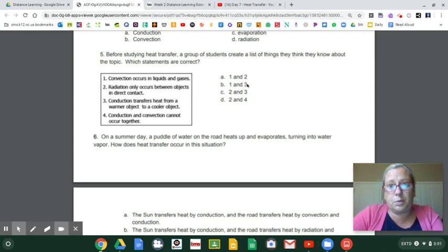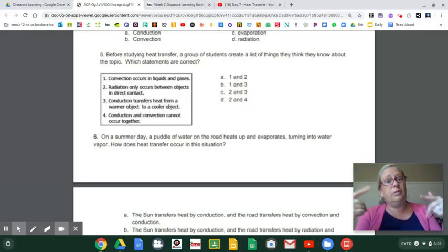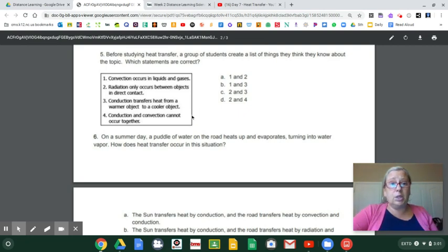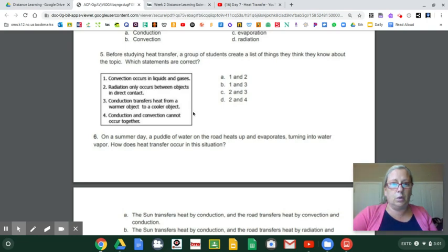Now I just have to decide if two or three is right. Two, radiation only occurs between objects in direct contact. Y'all, is radiation direct contact? I know you know. We just, like in the last one, said radiation is what? Yep. Sun and fire. So do you think two is right? Which leads me to my answer, right? Because if two isn't right, there's only one thing it can be. But let's look at number three. Conduction transfers heat from warmer to cooler object. That's true. It doesn't say anything about touching, but it's true.